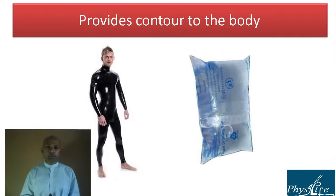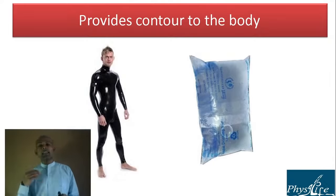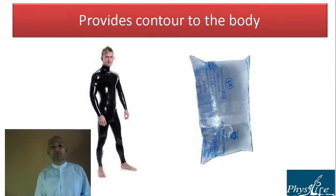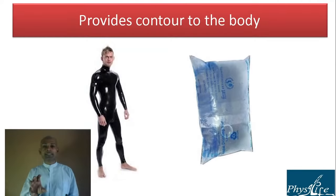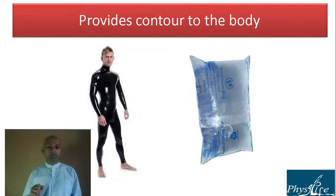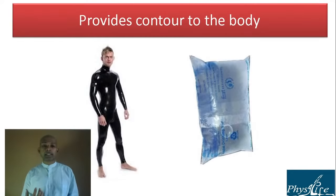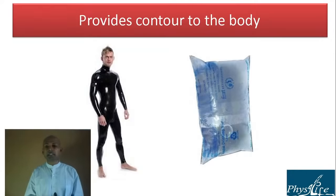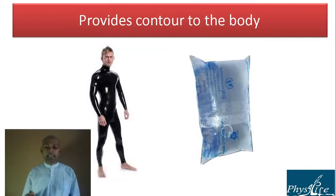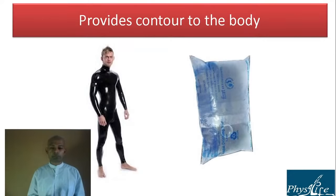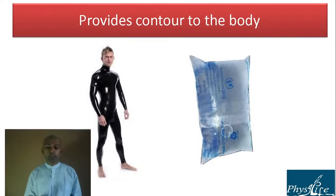Fascia provides contour to the body — it is like a body suit or the pouch of a water pouch. Soft tissue is otherwise a malleable semi-solid structure; fascia is what gives it shape.